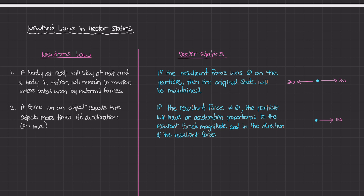The second part — 'in the direction of the resultant force' — means that if the resultant force is one Newton acting to the right, the acceleration vector is going to be in the same direction as the force vector. So if the force vector is acting to the right, the acceleration vector is also acting to the right. This is why direction is so important in vector statics, and why we express F equals ma in vector form: the resultant force vector equals mass times the acceleration vector, where the only scalar quantity is mass.